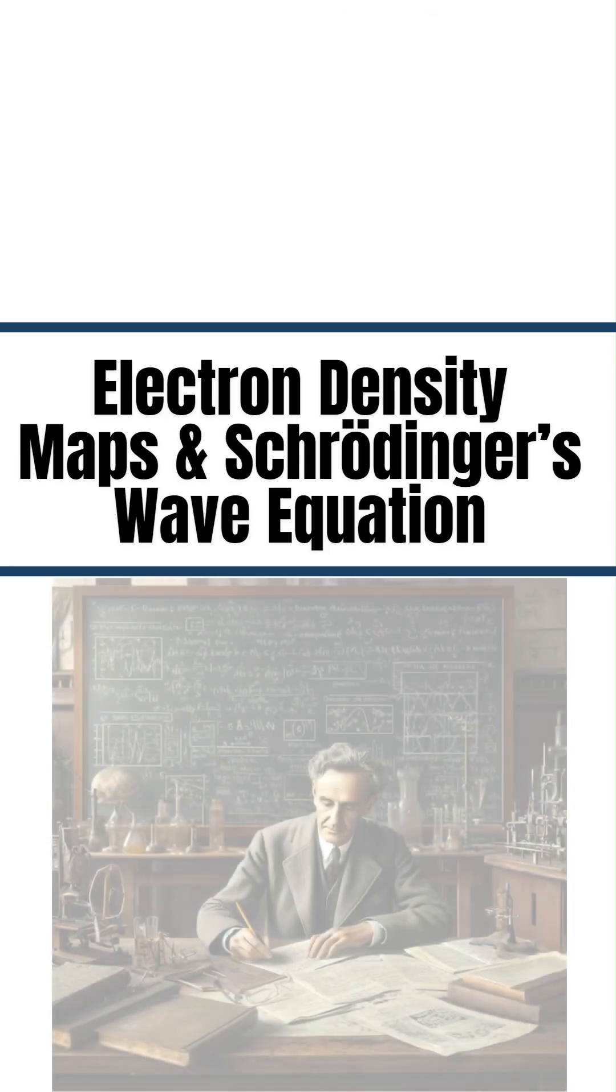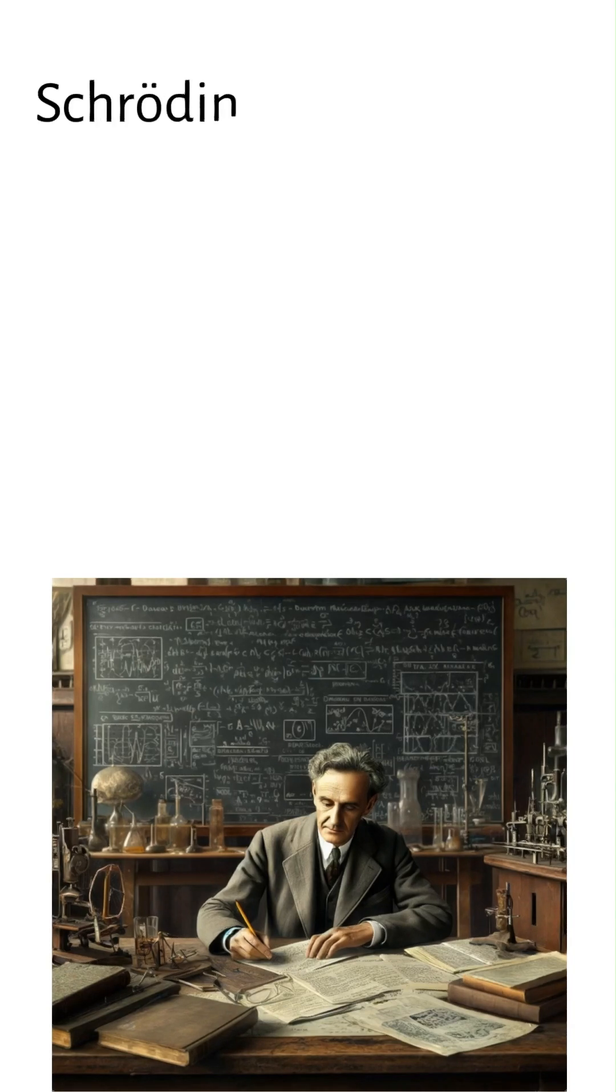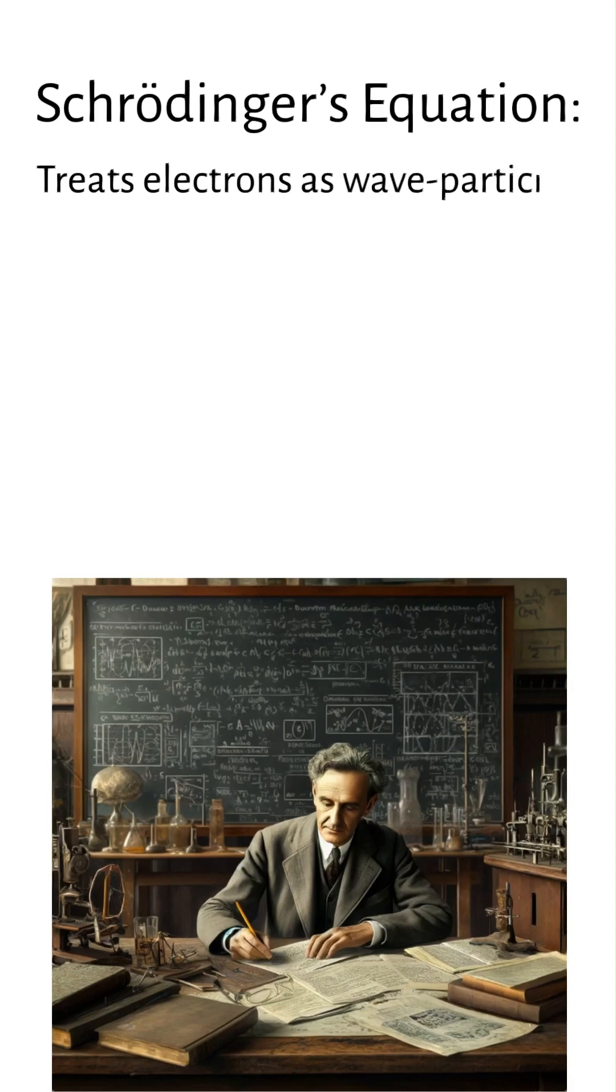The probability of finding an electron's location was further transformed with Erwin Schrödinger's wave equation, later known as Schrödinger's equation, which treats electrons as entities possessing both wave-like and particle-like characteristics and laid the groundwork for quantum mechanics.